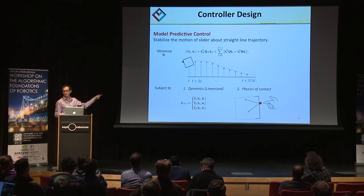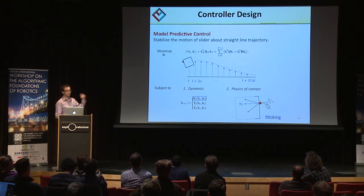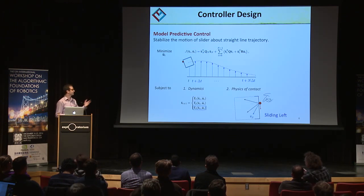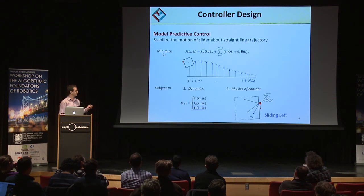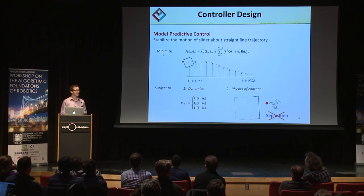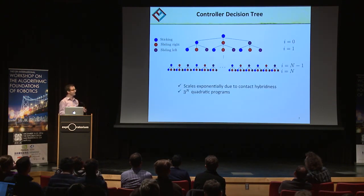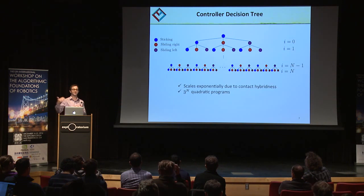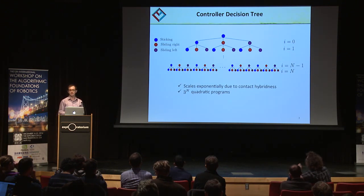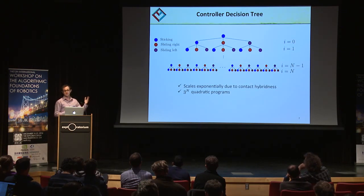The dynamics are written in hybrid form because you have different modes. For example, if you're sticking, you follow equations one; if you're sliding right or sliding left, you follow different motion equations. In our controller design, we neglect the case of separation, assuming the pusher always maintains contact with the slider. At each instant of the optimization program, you need to decide what contact mode you'll be in. Because there are N steps to this finite horizon problem, you can view this as a tree of optimization programs that scales exponentially — requiring solving 3^N quadratic programs in total.